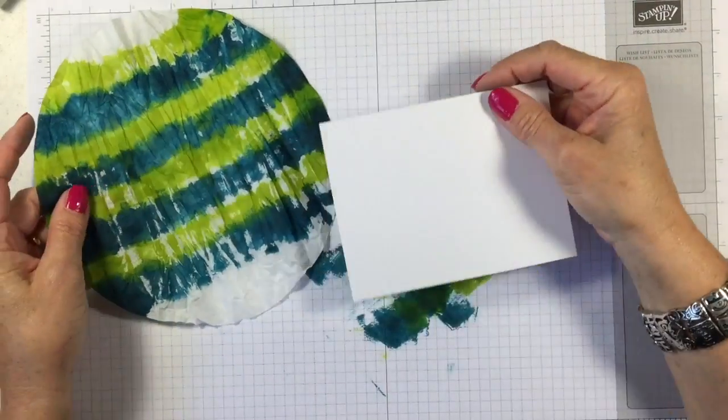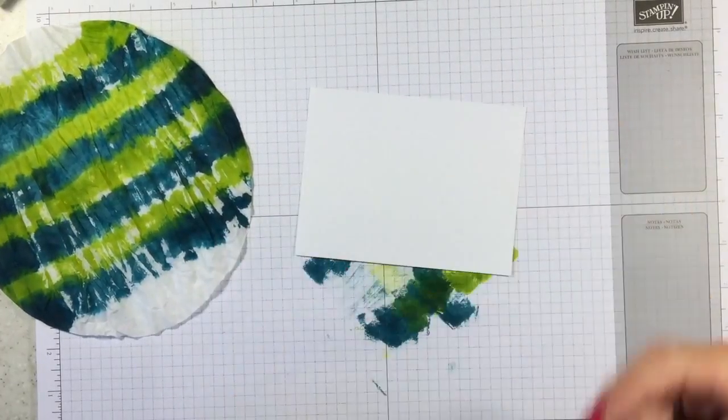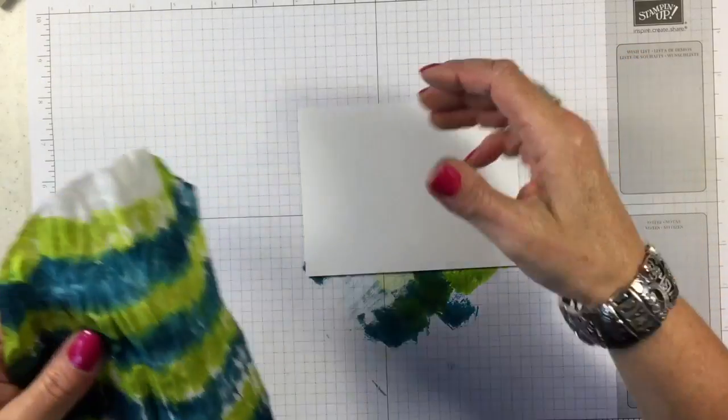Okay there we go. And now what I've got here is whatever size you want your layer to be, you want to cut your cardstock, just a piece of white cardstock, to be that size. And I've got this one at four by five and a quarter.